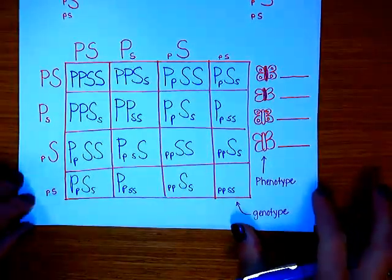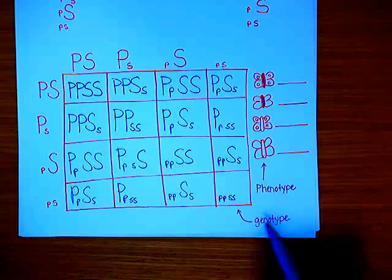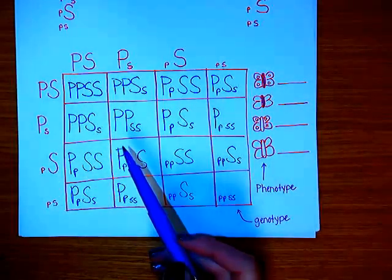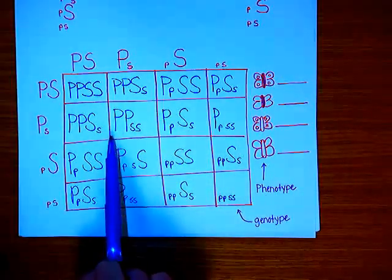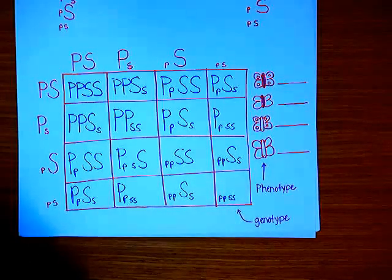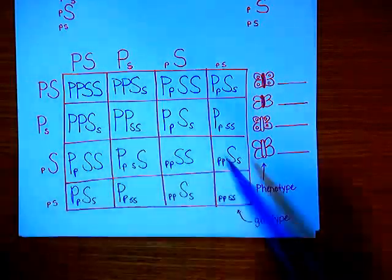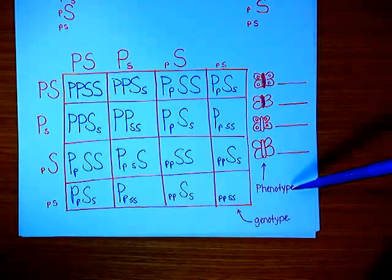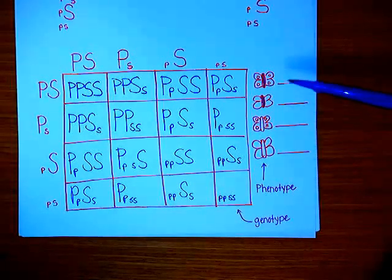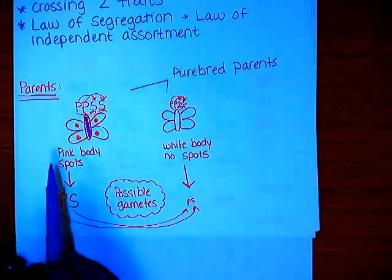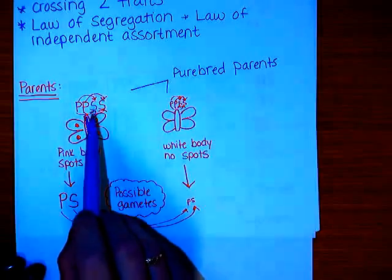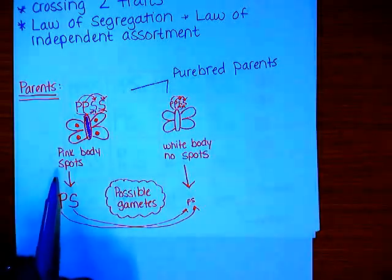Now that we have it all figured out, here's what our cross looks like. We have the genotypes of all of our potential offspring. Remember, genotypes are what we use the genes to represent — all the different alleles. We can then look at what we have and figure out the phenotypes, which are the physical appearance. So we can find out how many butterflies would have a pink body with spots, which is the dominant trait for both.